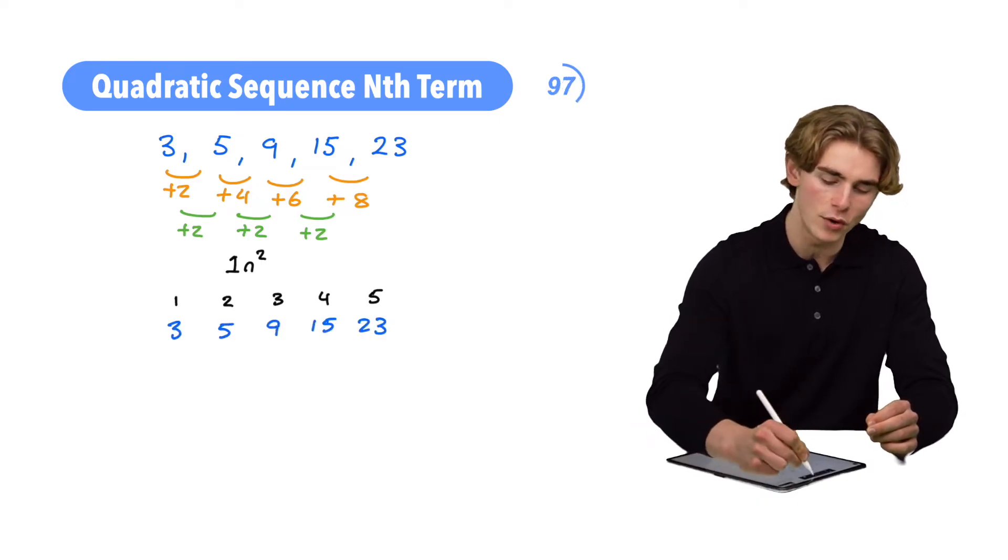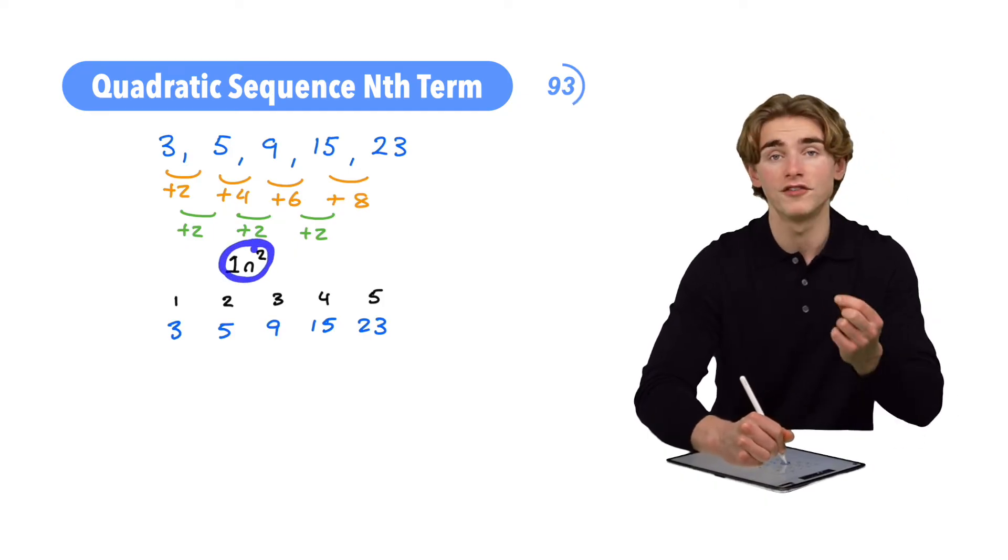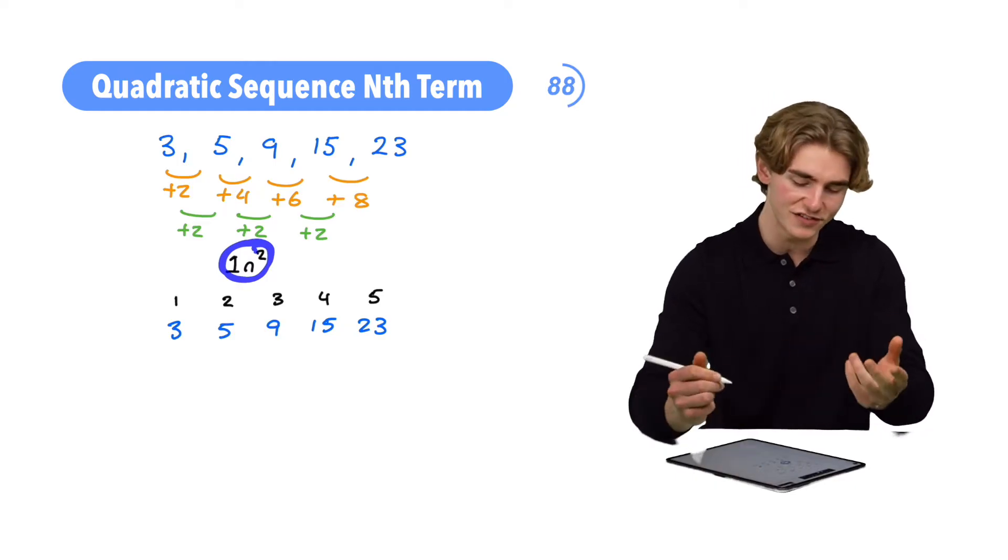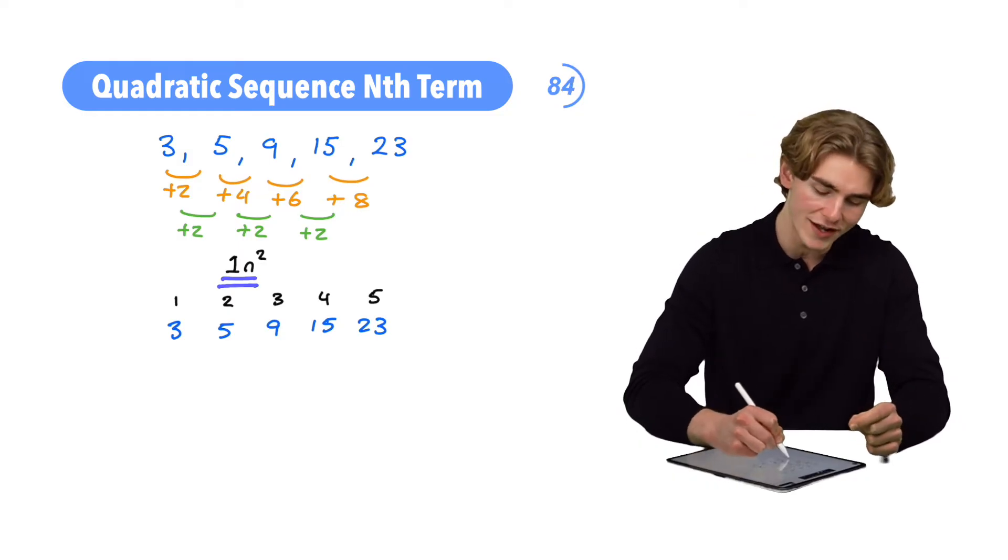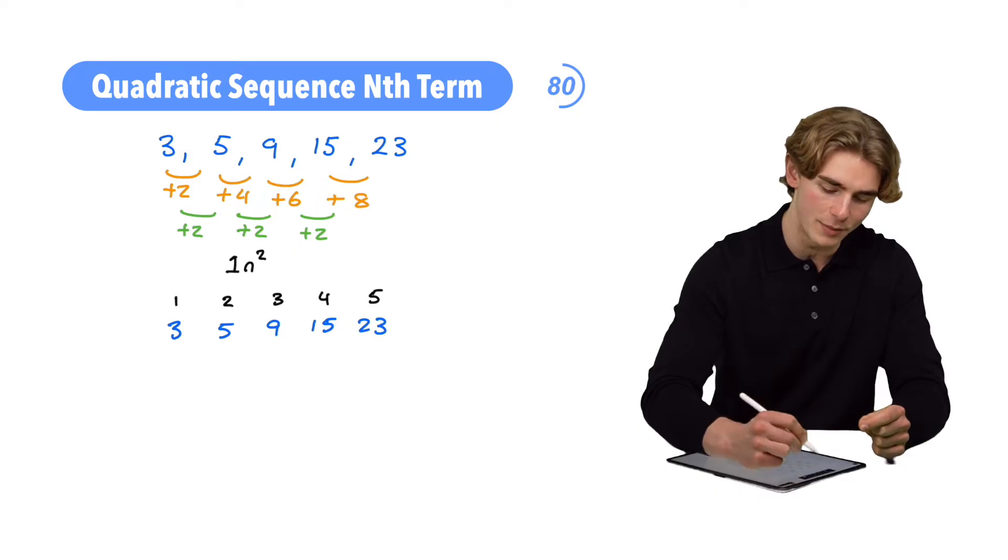Next step, guys, we're going to subtract the first term in our quadratic nth term from our original sequence. Now, remember, this n represents our term number. So if we're going to subtract 1n squared, we're going to subtract 1 times by our term number squared. So let's calculate what that's going to be.